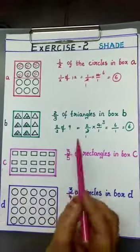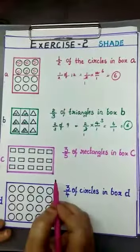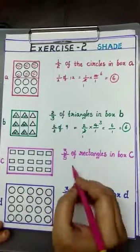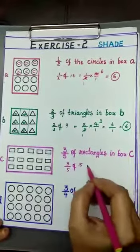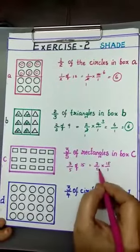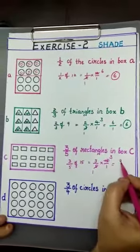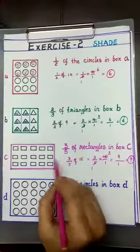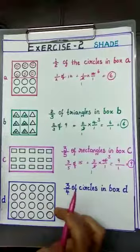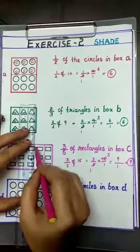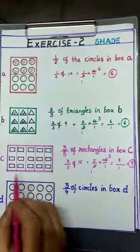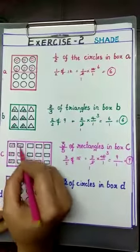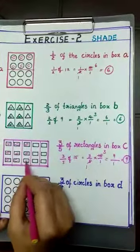Next: 3/5 of the rectangles in Box C. Each row has 5 and each column has 3, so 5 times 3 equals 15 rectangles. So 3/5 of 15 means 3/5 into 15/1. Simplify: 5 ones and 5 threes; 3 threes are 9, giving 9/1, which is 9. Shade 9 rectangles. Divide vertically into 5 equal parts of 3 rectangles each, then shade 9.